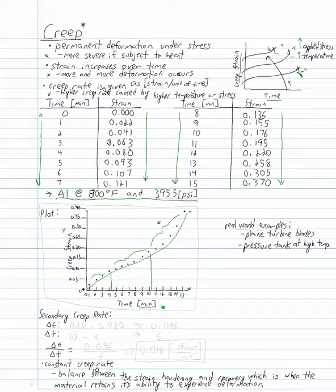Our range is from time 4 to 10, so our delta t is 10 minus 4. For strain, we look at the plot: for time equals 10, we have 0.176 minus our time 4 corresponding strain, which is 0.080. Solving for those values, we get 0.096, and for our delta t we get 6.